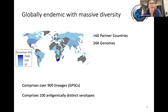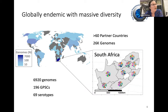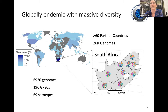It's globally endemic and has massive diversity. As part of the Global Pneumococcal Sequencing Project, we've tried to capture some of this diversity. This now comprises 26,000 genomes from over 60 partner countries, classified into over 900 lineages or GPSCs, comprising 101 antigenically distinct serotypes. If you zoom in on a single country such as South Africa, you can see that diversity really persists across the nine provinces, though it's hard to say if regional differences result from sampling bias or are truly geographically distinct.